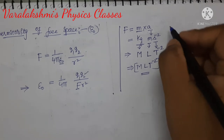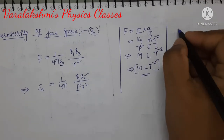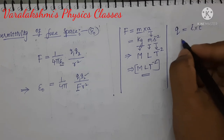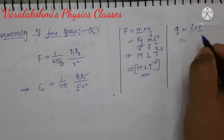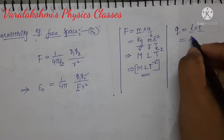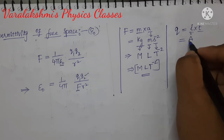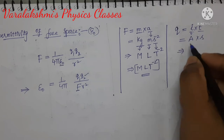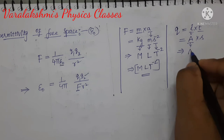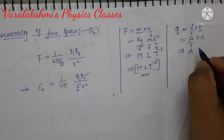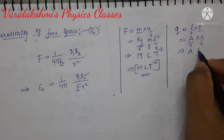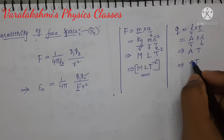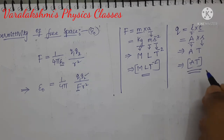Let us find for charge. The formula for charge is current multiplied by time. Now write the SI unit for current and time: current's SI unit is ampere, and for time it is second. Now write the dimensions: ampere is expressed in terms of capital A, and second is expressed in terms of T. So the dimensional formula for charge is A T.